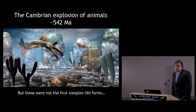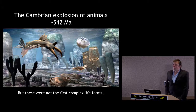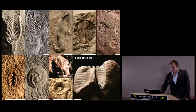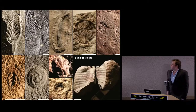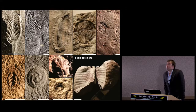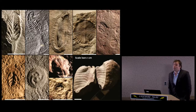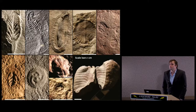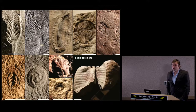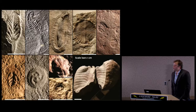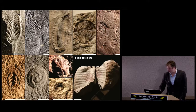What is less well appreciated is that these were not the first complex lifeforms on this planet. Before the Cambrian period we have what's called the Ediacaran period, and in Ediacaran rocks we find this bizarre, enigmatic collection of basically weirdies — alien and dramatic shapes. And we have no idea where these things fit in the tree of life.